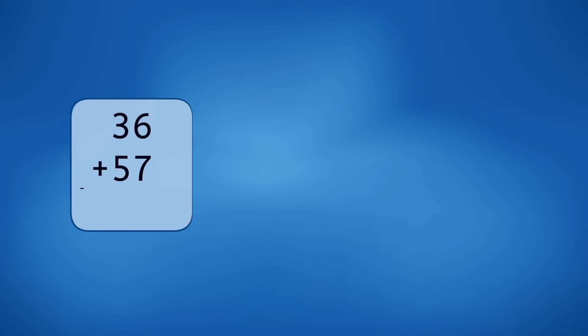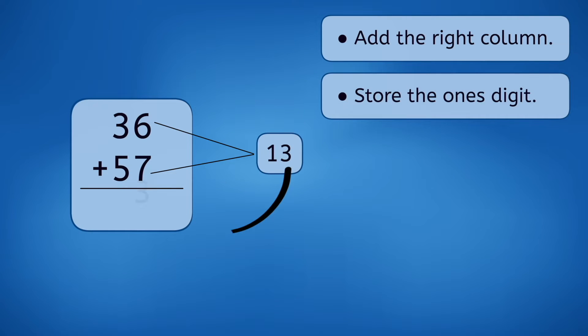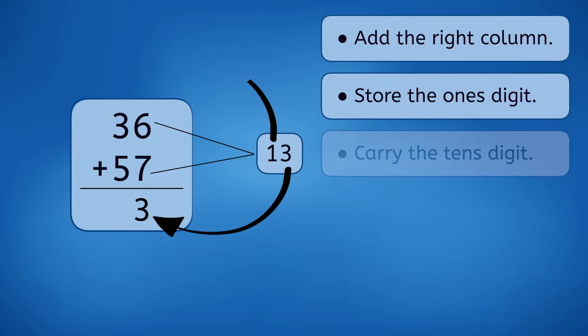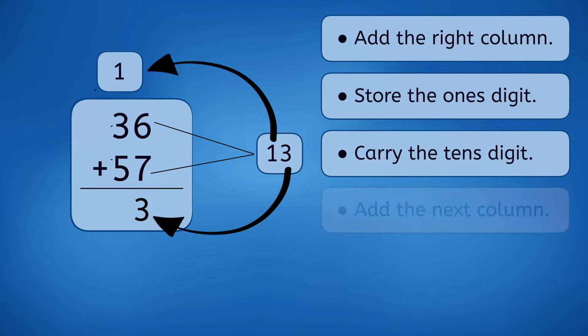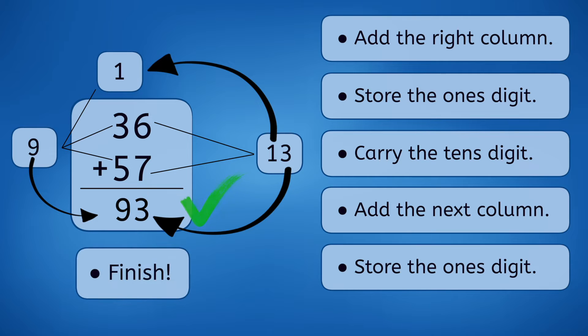Back when computers first came into existence, they had no built-in programming. Every step of every calculation had to be explicitly told to the computer. A computer may not have known what it means to add 36 and 57. Instead, you would have had to write a program that told it to add the right column, store the ones digit, carry the tens digit, add the next column, store the ones digit, then finally finish.